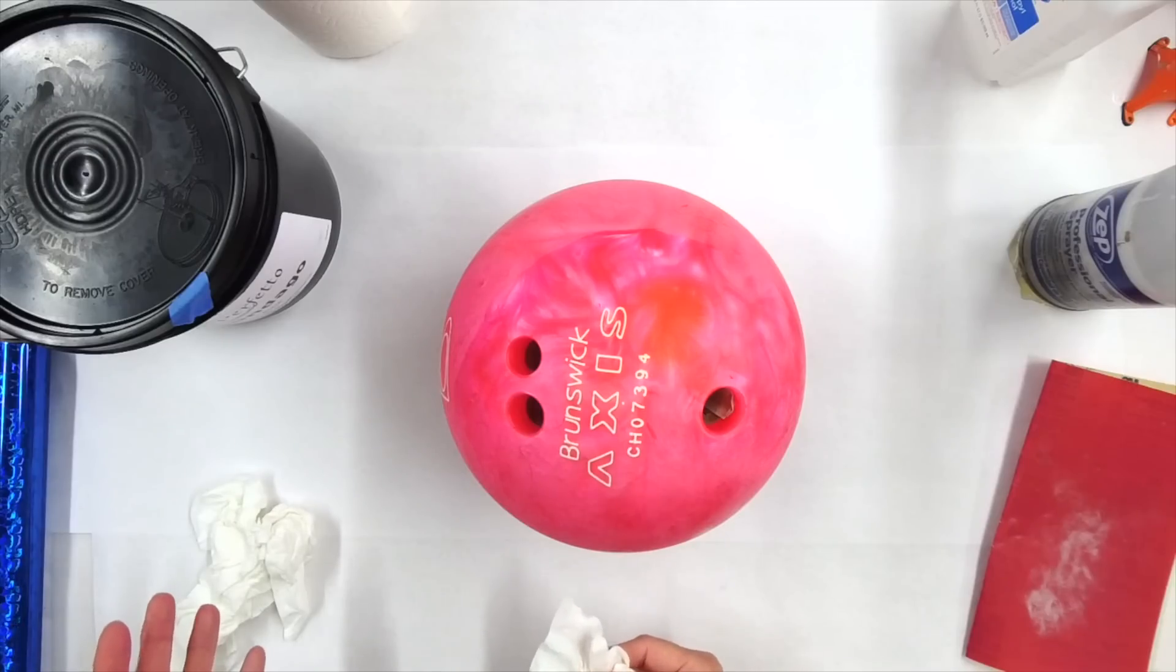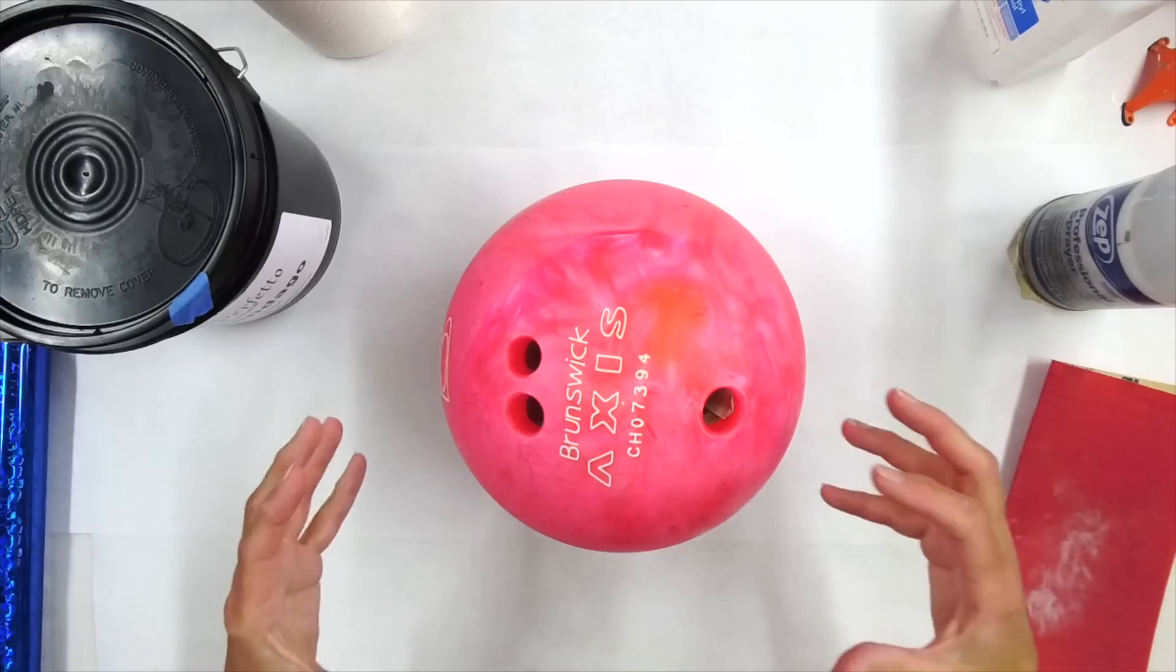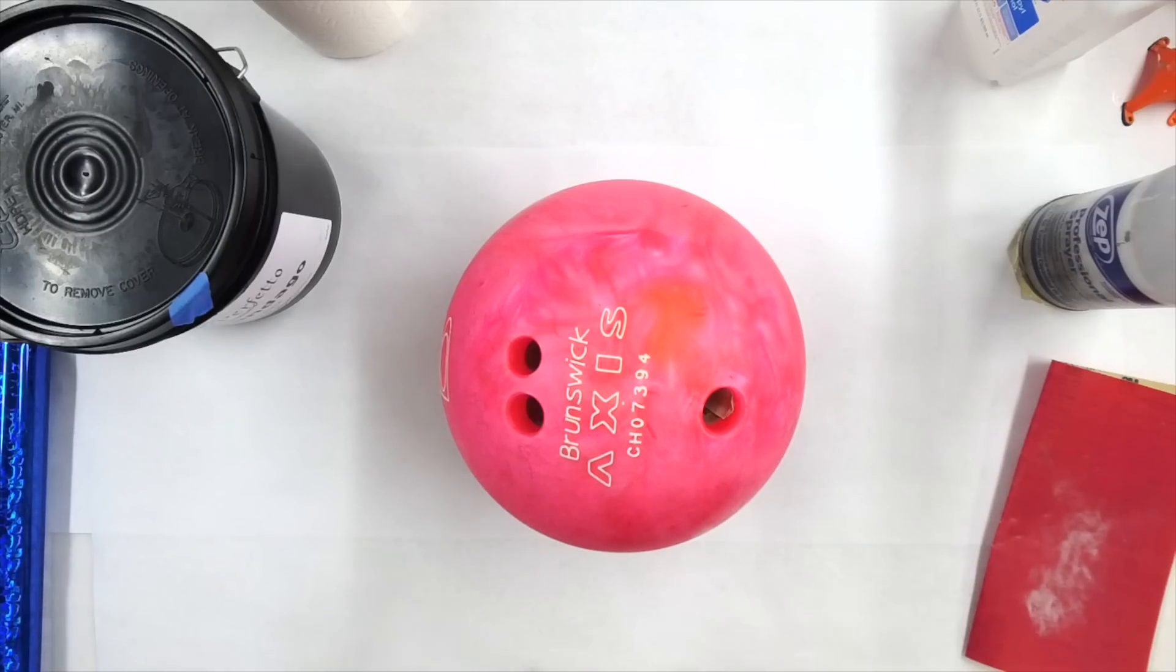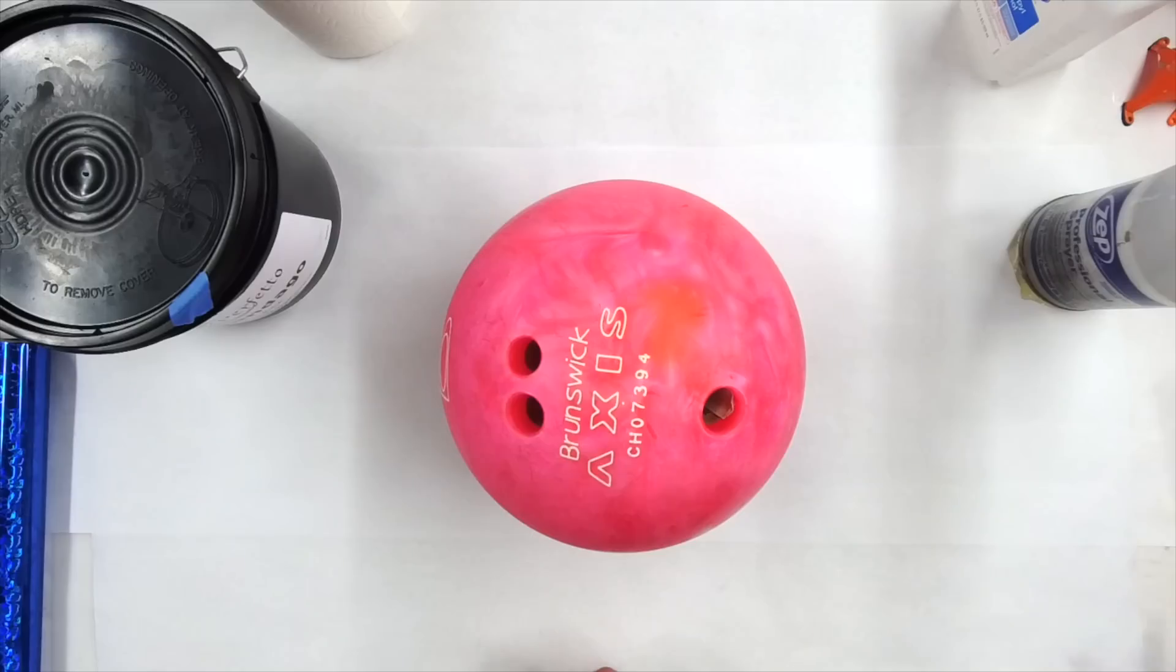One thing about when you're trying to get a really good bond on something that's kind of a plastic material is to try to not put your hands back on it too much. So I might even end up gloving up as I move it around so I don't end up with creating a resist.